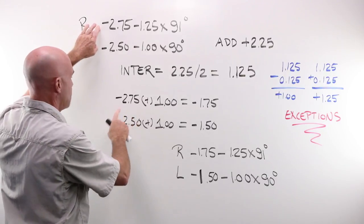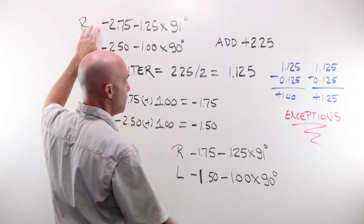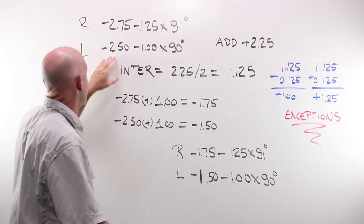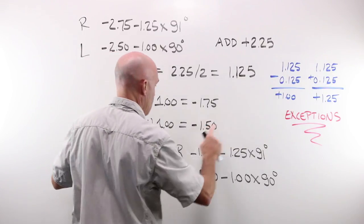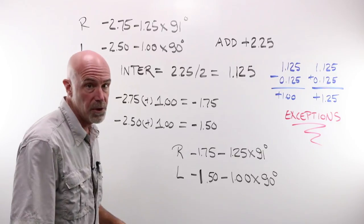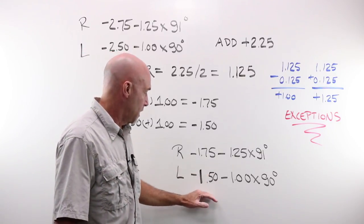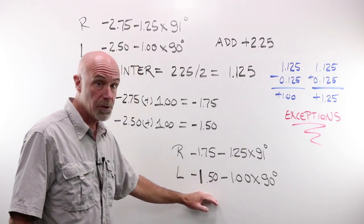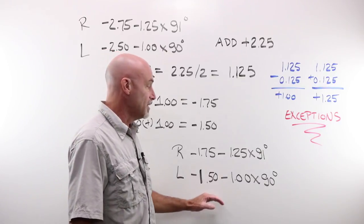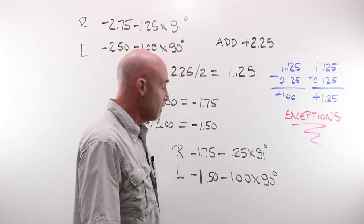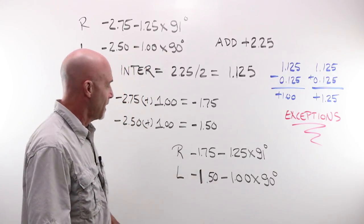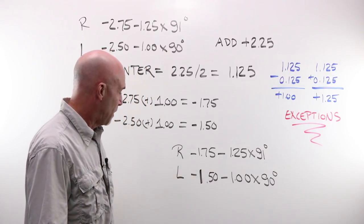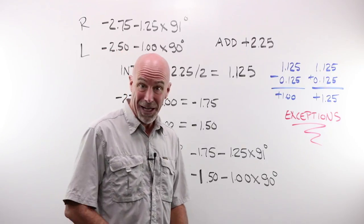If I take my -2.75 sphere and I add +1.00, I end up at -1.75. I take my -2.50, and I add my +1.00 that I chose, I end up at -1.50. This would be the intermediate prescription I'd fill for this person, and clearly easily would have those in the back in my stock single vision drawers with some beautiful AR, and I would fill them, make them a beautiful pair of glasses, and make some money.